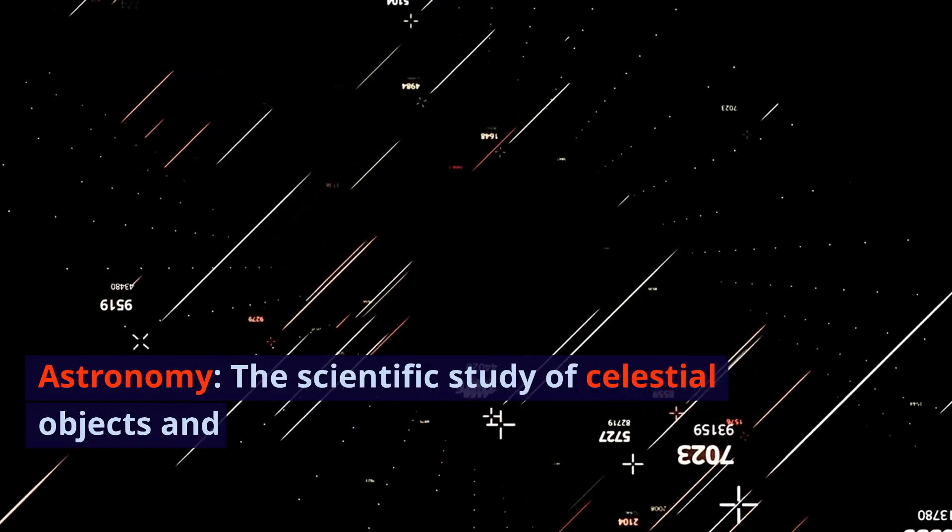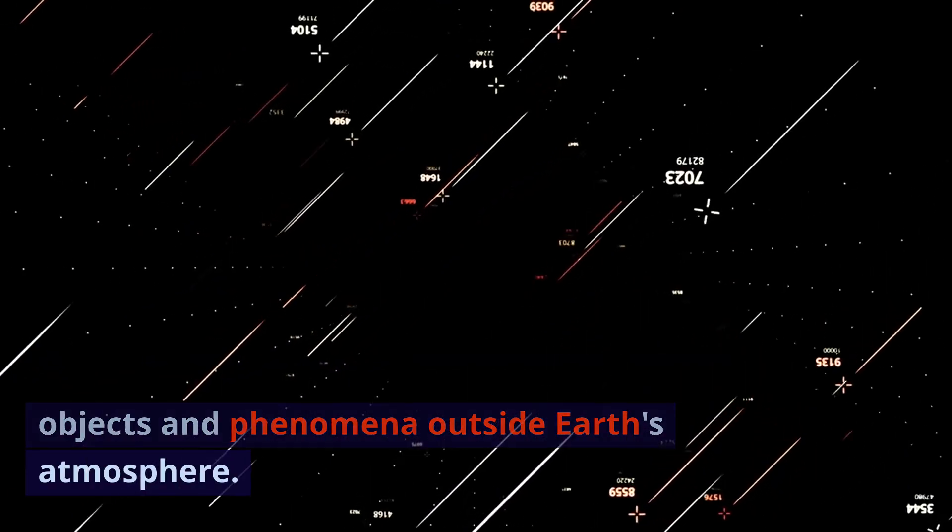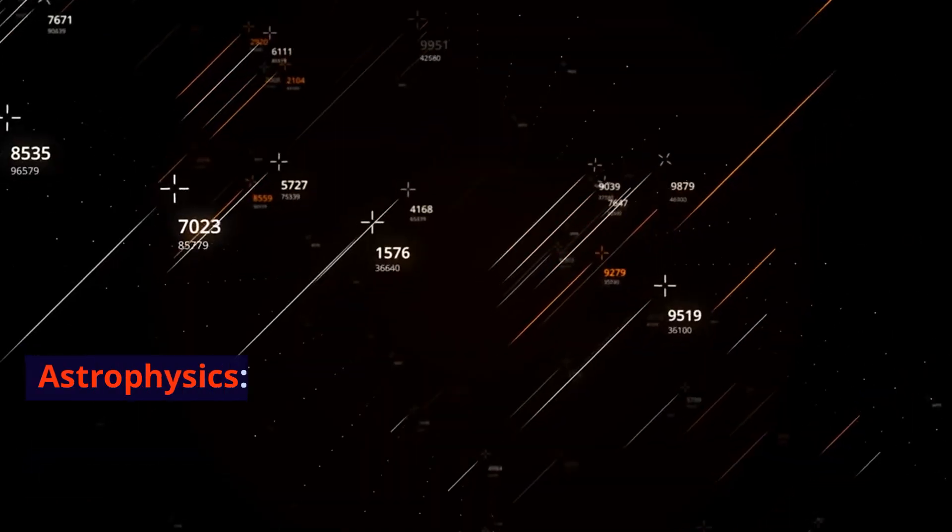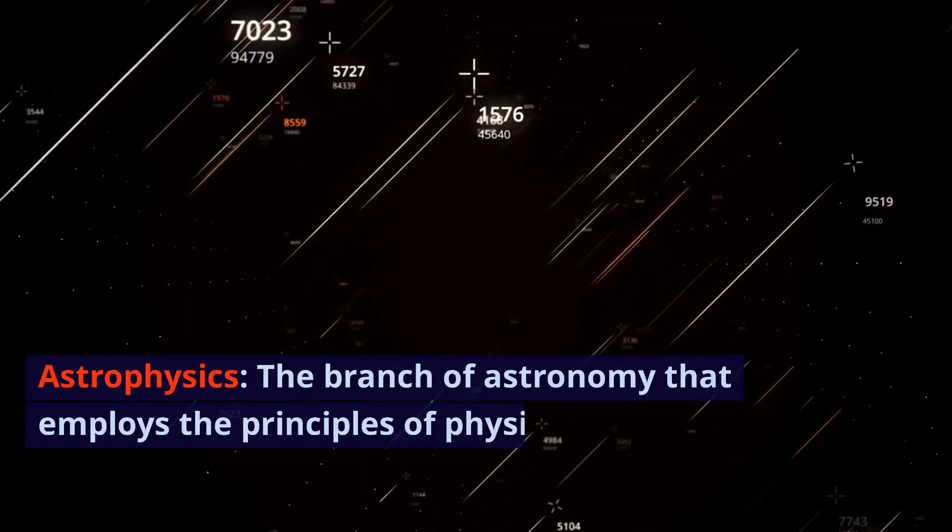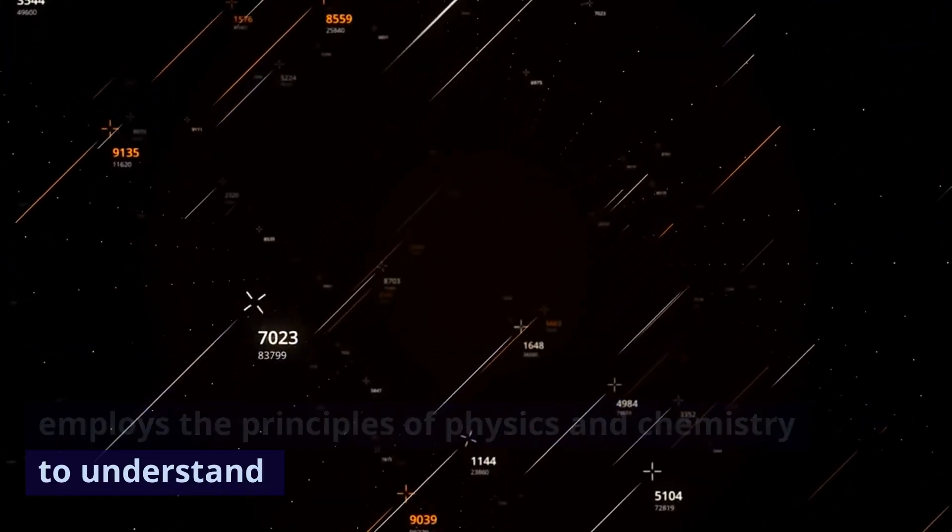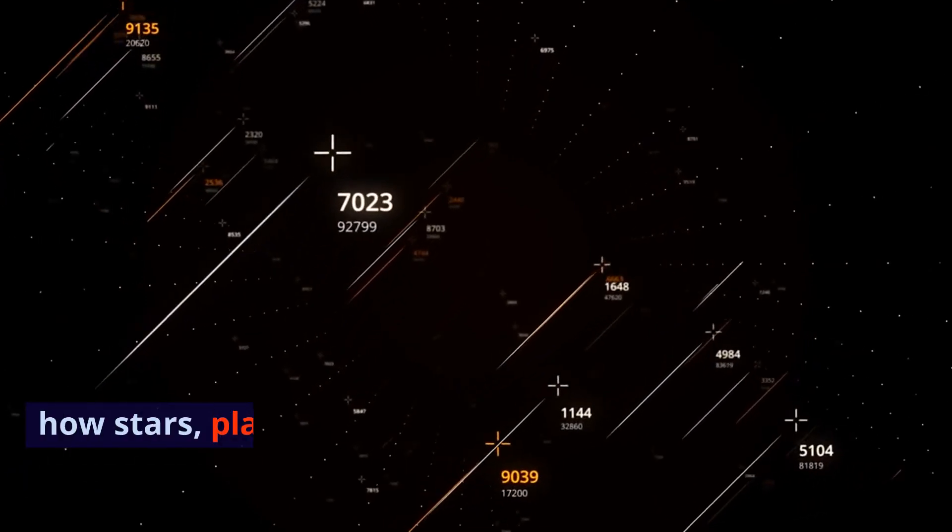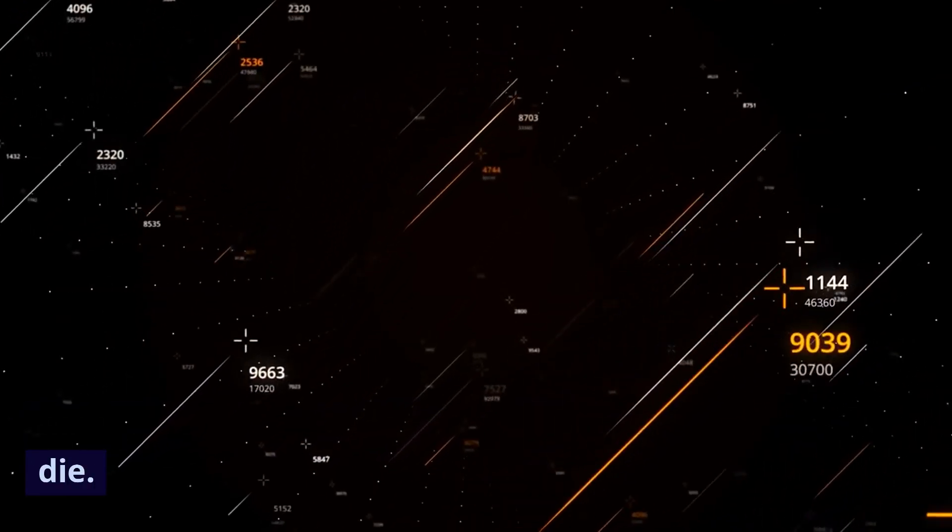Astronomy. The scientific study of celestial objects and phenomena outside Earth's atmosphere. Astrophysics. The branch of astronomy that employs the principles of physics and chemistry to understand how stars, planets, and galaxies form, evolve, and die.